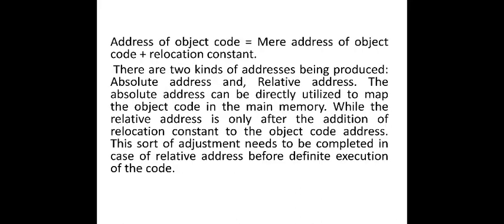After loading, the address of the object code will be the mere address of the object code plus the relocation constant. When we speak about addresses in relocation, two different kinds of addresses are produced: the first is called an absolute address and the second is called a relative address. The absolute address can be directly used to map the object code in main memory, while the relative address is obtained only after adding the relocation constant to the object code address. The relocation constant is related to the relative address and not to the absolute address, so this adjustment must be completed for relative addresses before definite execution of the code.